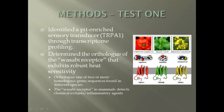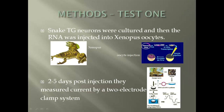For test one, they had to identify what this molecular structure would be. They were able to identify a pit-enriched sensory transducer called TRP A1 through transcriptome profiling. They determined that the ortholog — one of two or more homologous gene sequences found in different species — of the wasabi receptor exhibits robust heat sensitivity. In mammals, the wasabi receptor is used to detect chemical irritants or inflammatory agents, not heat.